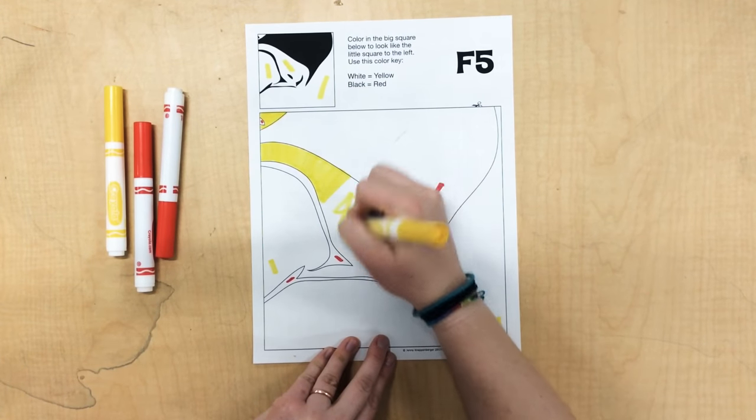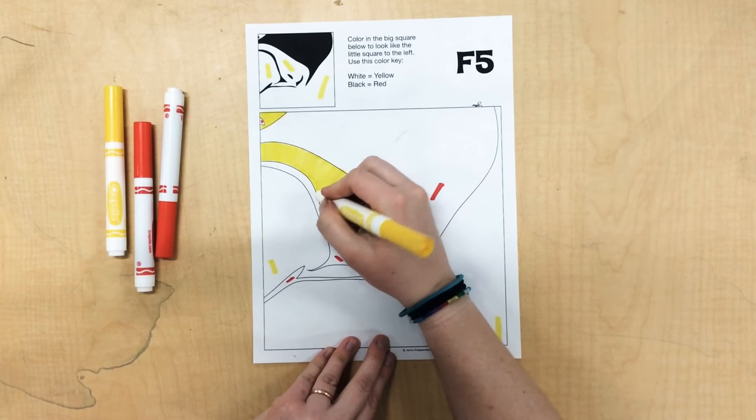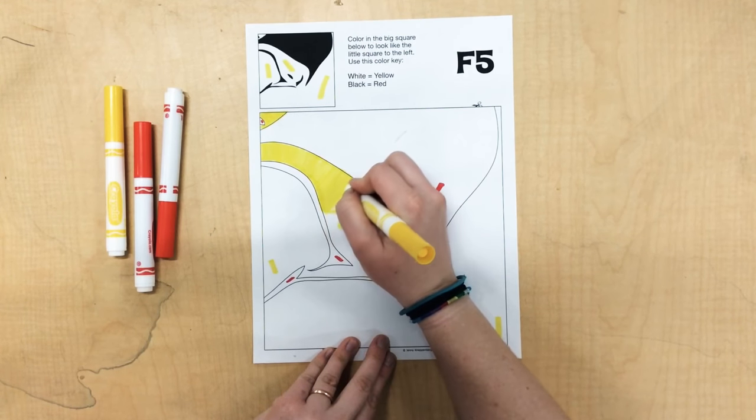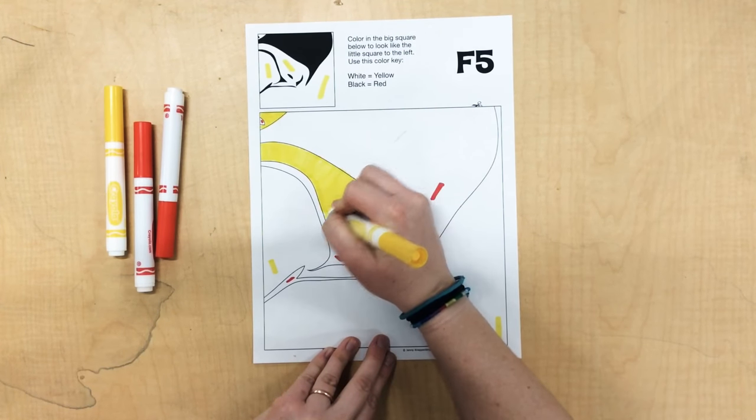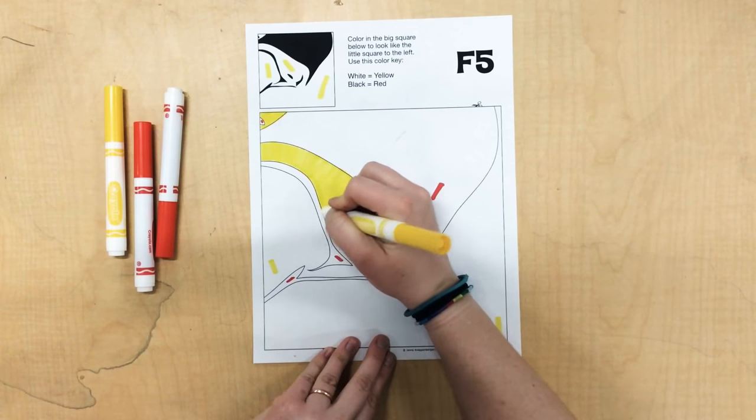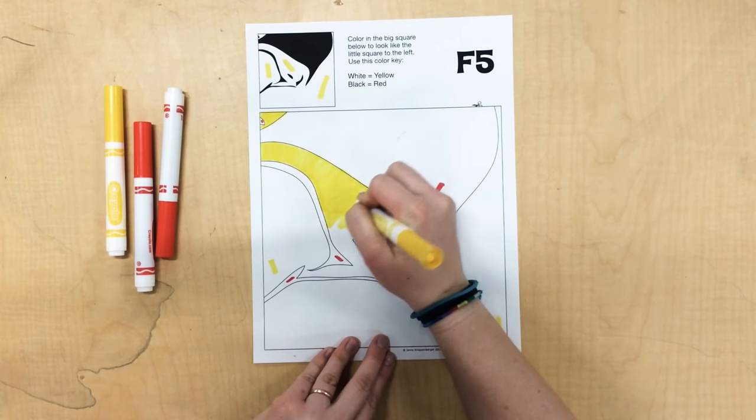We're not scribble-scrabbling all over like this. We're just going to go back and forth, back and forth, and take your time being neat and controlled.